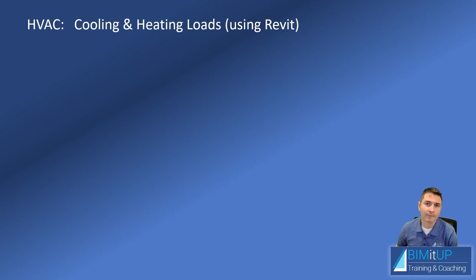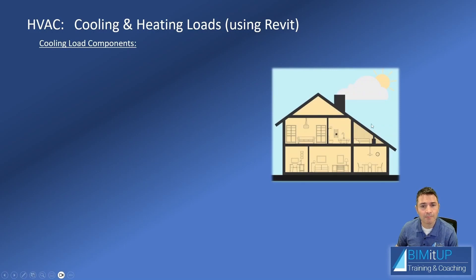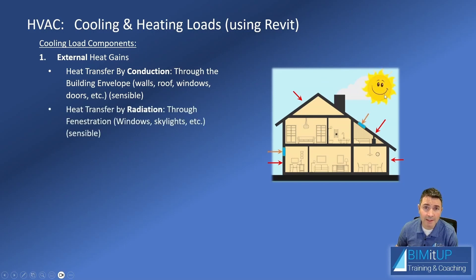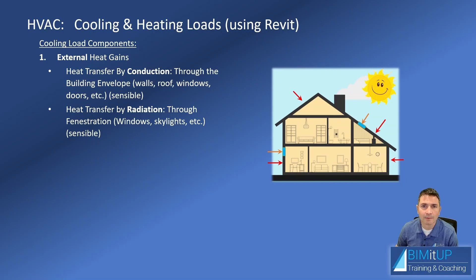Continuing with our HVAC series on cooling and heating loads using Revit, let's briefly discuss some cooling load components. Whenever you have a building, you're going to have external heat gains, which include heat transfer by conduction through the building envelope — the walls, the roof — from the exterior to the interior. Then you have heat transfer by radiation, which happens through your windows, skylights, glass doors, and similar. That's going to be sensible heat.